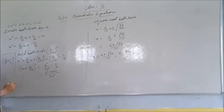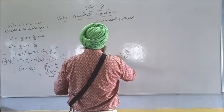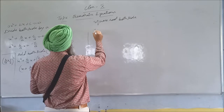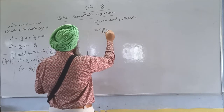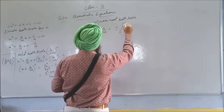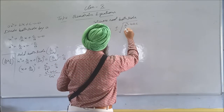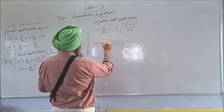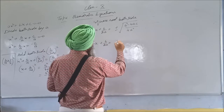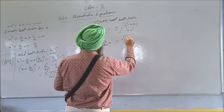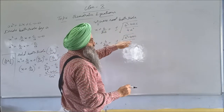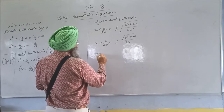Third step: take the coefficient of x, which is b upon a, make it half, and square it. So this becomes (b upon 2a) whole square. Add both sides (b upon 2a) whole square. Look at the left hand side — it becomes (x plus b/2a) whole square. Solve the right hand side, take care of the LCM. Take the square root of both sides.